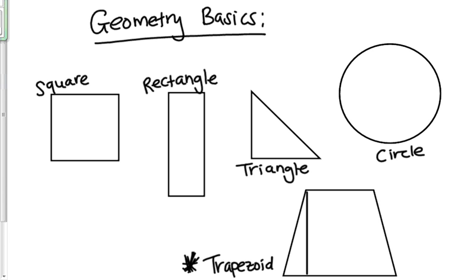So the area of a square is length times width. The area of a rectangle is also length times width.